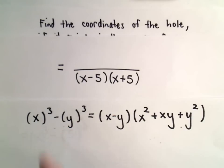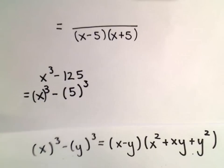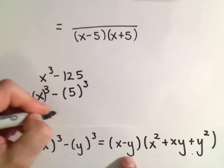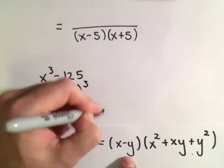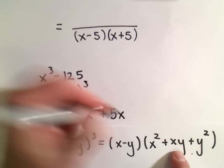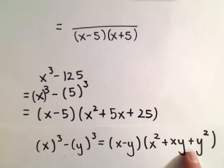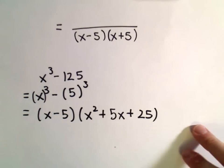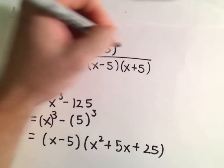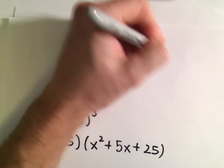In our formula, all we need to do is just replace the y with positive 5. So if we replace the y with positive 5, we would get x minus 5. Then we would have x squared. We would have x times 5, or 5x, plus 5 squared, or 25.